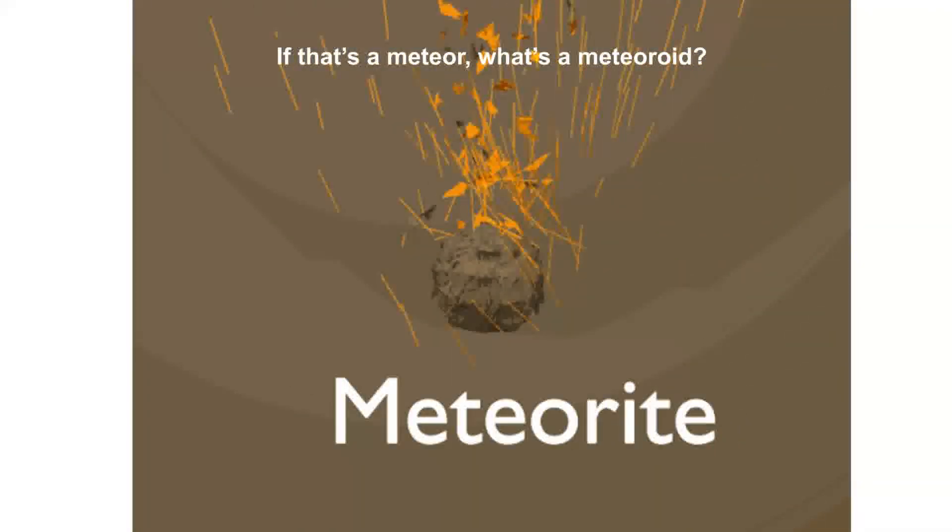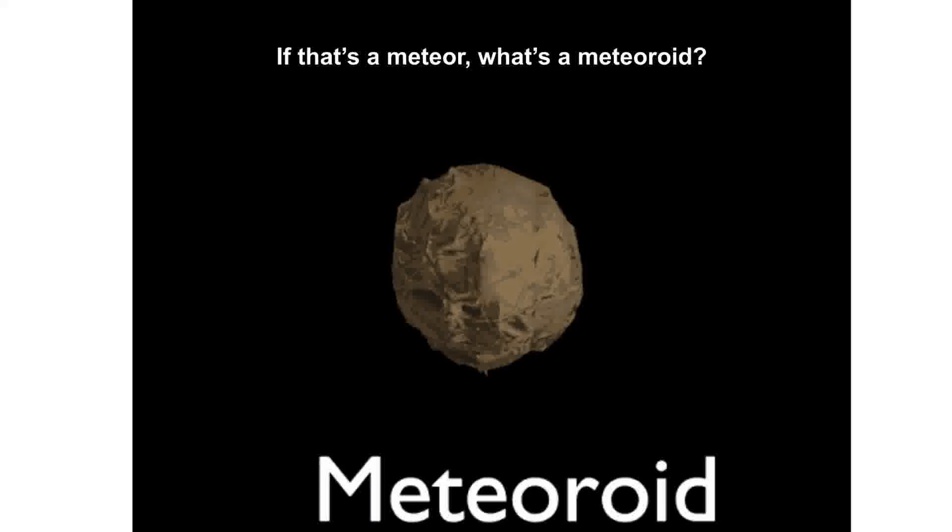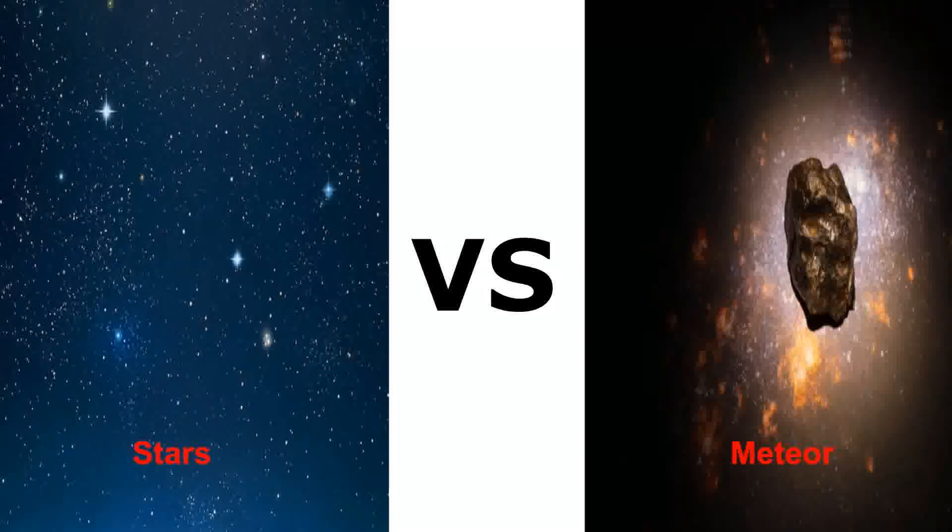And once it crashes into the planet, it becomes a meteorite. Why do people call a meteor a shooting star then?